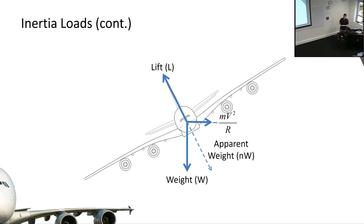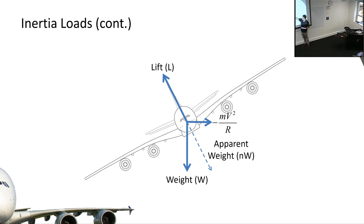Why are these conditions important? In a turn, when this load factor n is greater than one, all of the aircraft structure generating that lift is experiencing loads scaled by this load factor. Remember lift equals n times weight - if you're generating more lift, you're generating larger stresses and more loads on your airframe. This n is really a scaling factor for how much stress we're putting the aircraft under.